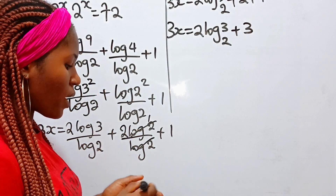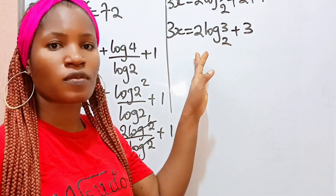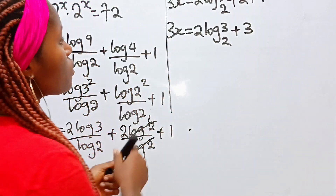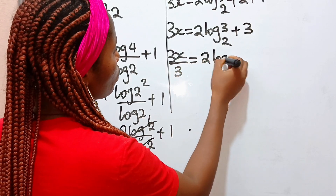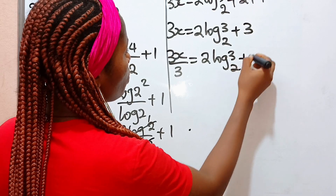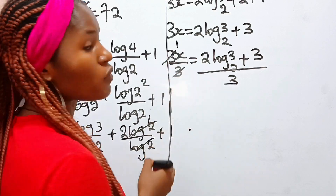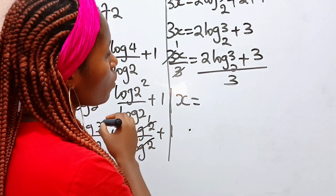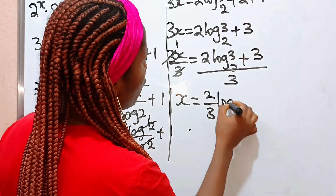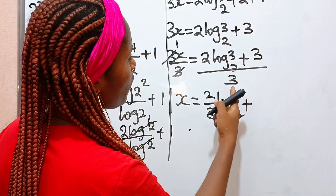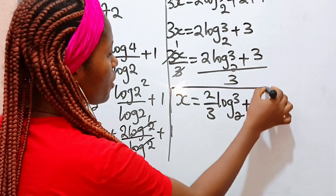Now remember that we are looking for the value of x and not 3x. So we divide both sides of this equation by 3. So 3x divided by 3 gives us x, equal to 2 log 3 base 2 plus 3, all divided by 3. This gives us x equals two-thirds log 3 base 2 plus 1. This is the value of x.